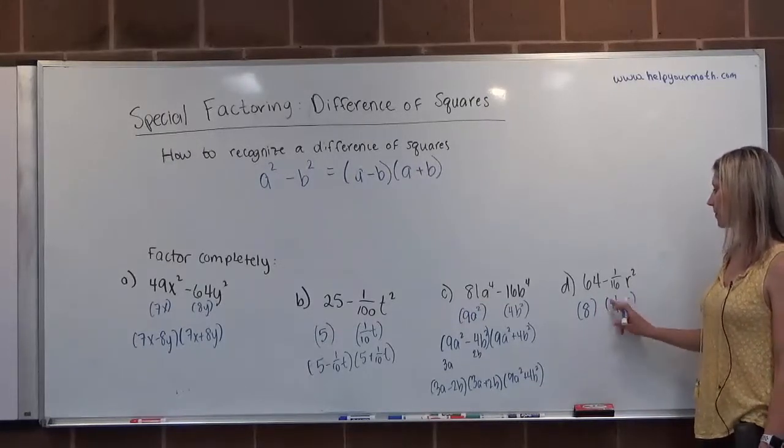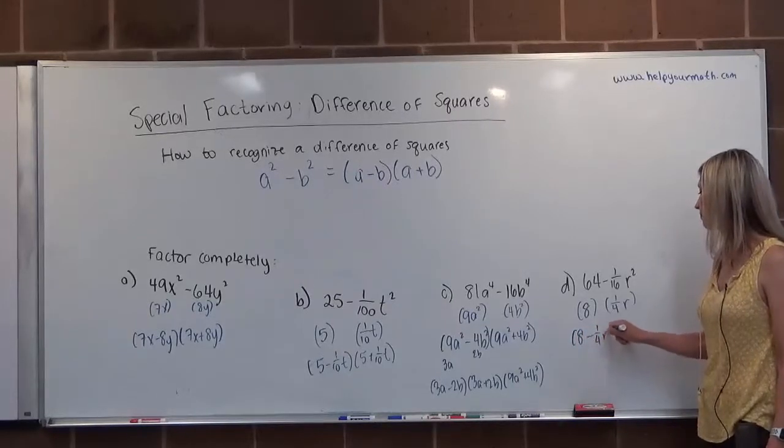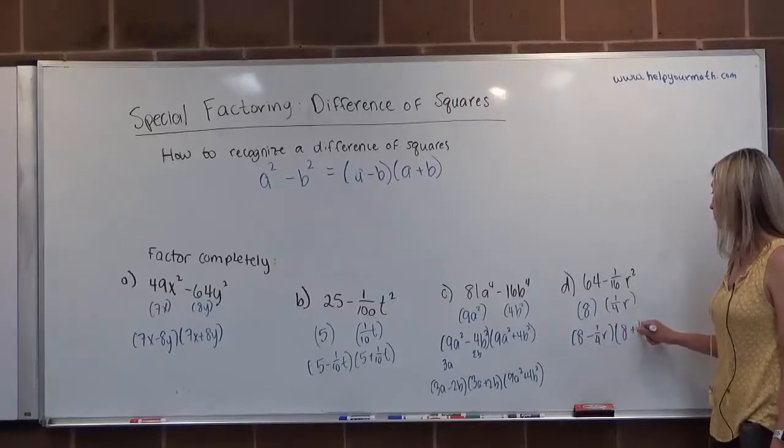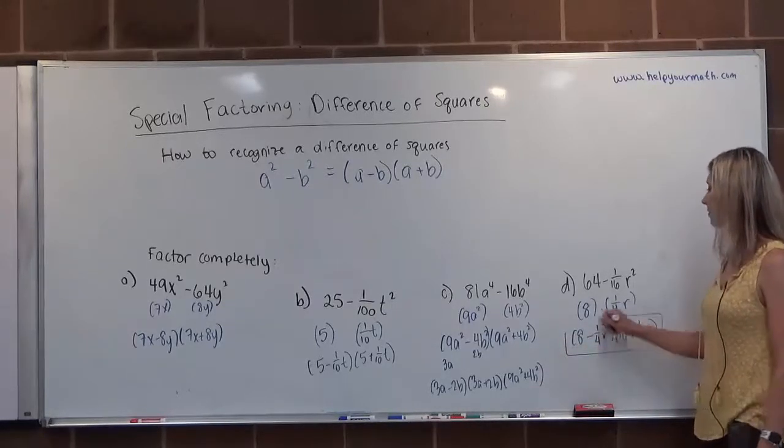We do see our difference of squares. We see our subtraction. So it's going to be root minus root times root plus root. And that would be our factoring of the difference of squares. We'll see you next time.